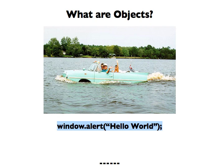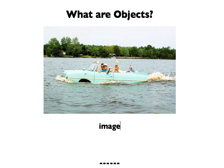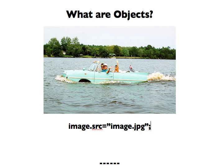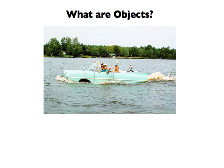Another type of object is an HTML element object called an image. Its source property — is that a method or a property? If you said property, you'd be right. This property describes the object and it retrieves the actual image. So if I had an image.jpeg sitting on my server, it would retrieve that and show it using that source property. Those are just a few examples of using objects, methods, and properties, and translating that into real-world terms to make it easier to understand how it works within JavaScript.